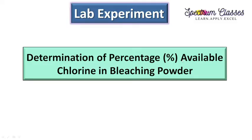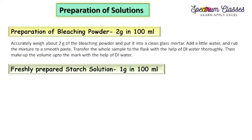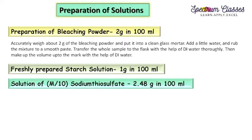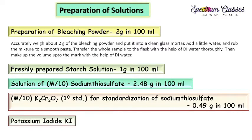You may also wonder why we call it 'available chlorine' rather than just 'chlorine' — we will discuss that in the upcoming slides. First, let's discuss what solutions we require for this experiment: bleaching powder solution, freshly prepared starch solution, sodium thiosulphate solution of known concentration (in this case M/10), potassium dichromate as a primary standard to standardize the sodium thiosulphate, and 10% potassium iodide solution or potassium iodide in solid form.